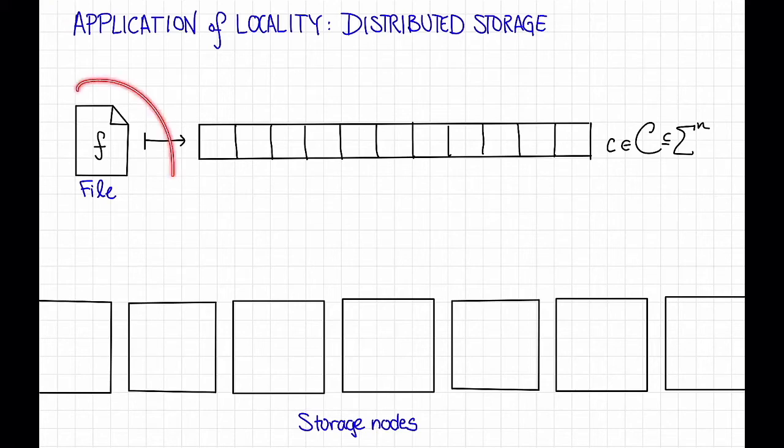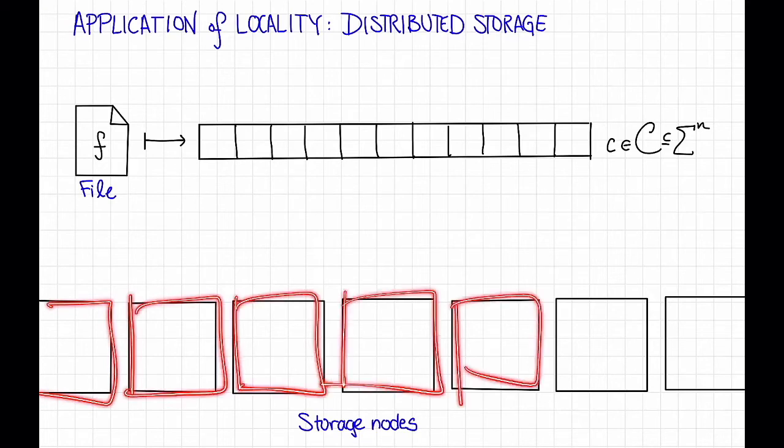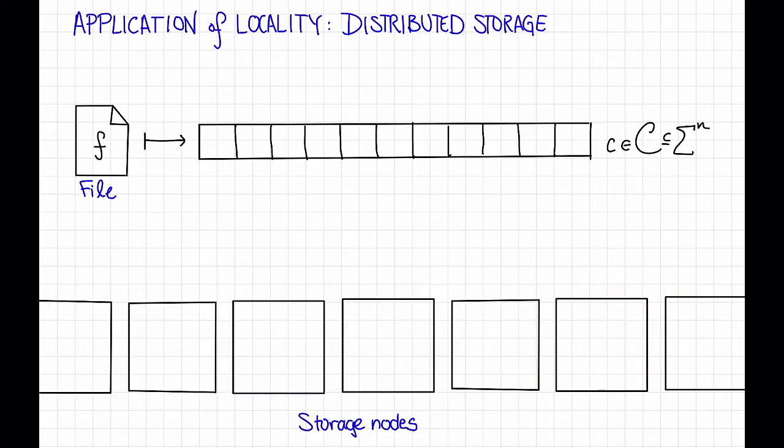Suppose that we have some file f, and we want to store it on a bunch of storage nodes, depicted here as black squares. One way to do that is to first encode the file f using our favorite error-correcting code, so we end up with some codeword here, and then we're going to ship each symbol of this codeword off to a different storage node.